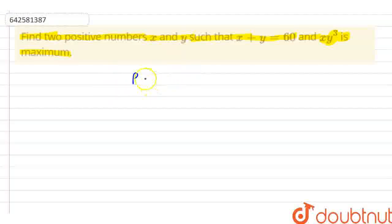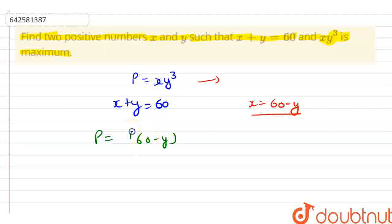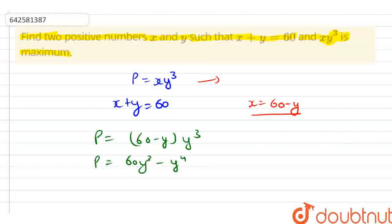In this question, we have given that the product — let's denote it with P — that is x·y³. And it is given that x plus y is equal to 60, so the value of x will be 60 minus y. Now let's put this value into P. So we have P is equal to (60 minus y) into y cube, which gives P equals 60y³ minus y⁴.